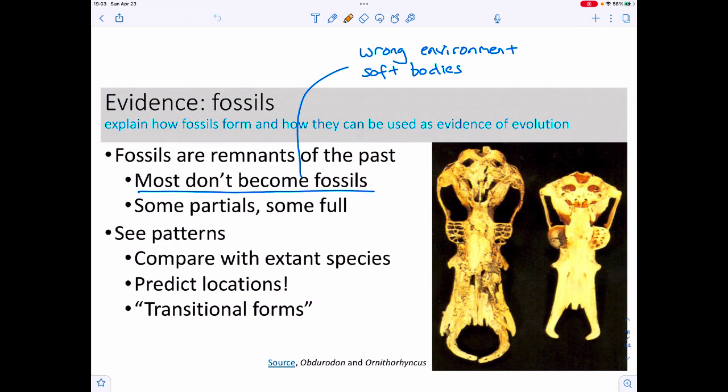When we look at the evidence for evolution, we can put it into a whole bunch of categories, and perhaps the most famous would be fossils. Fossils are remnants of anything from the past. We normally associate this with skeletons, but most things have soft bodies without skeletons. Most organisms do not become fossils because the conditions to make a fossil are actually not that common. You need to have the correct environment.